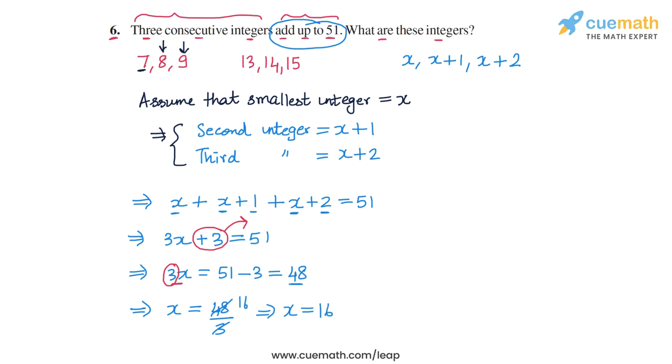Alright, now we found the value of x. And that will give us the three integers immediately. So the smallest integer is x or 16, the next integer is x plus one or 17, and the third integer is x plus two or 18.